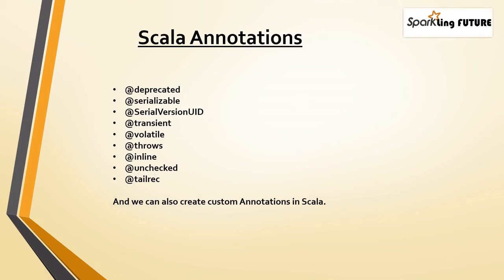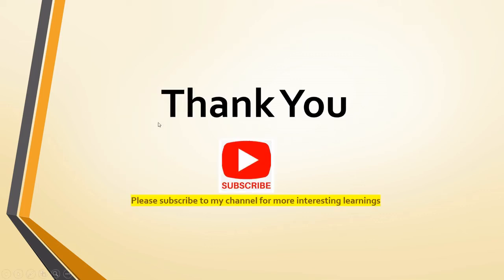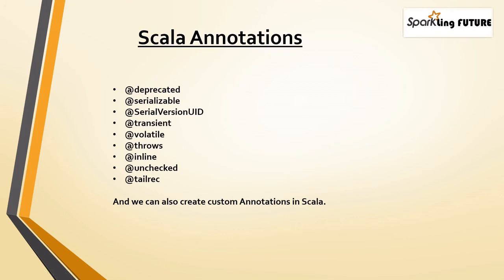@transient is used for not persisting any object — it makes the field non-persistent. Also, if you don't want any field to be serialized at all, use @transient. The syntax is @transient followed by the variable name.